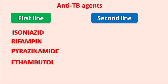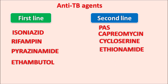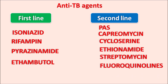Second line drugs include many other types of drugs which can be added to the therapy when the first line drugs are ineffective or produce side effects requiring replacement. Drugs like para-aminosalicylic acid, capreomycin, cycloserine, ethionamide, streptomycin, fluoroquinolones, and macrolides are used as second line agents. Antibacterial agents such as aminoglycoside antibiotics, fluoroquinolones, and macrolides are also used as second line agents.